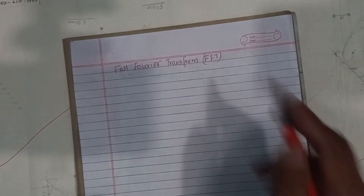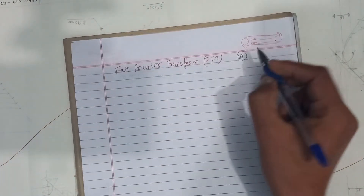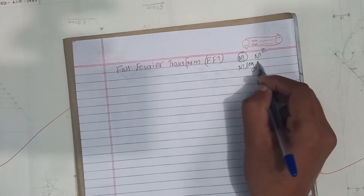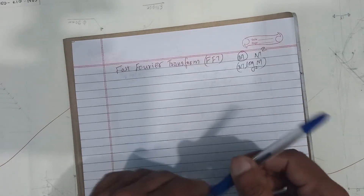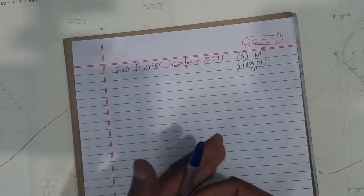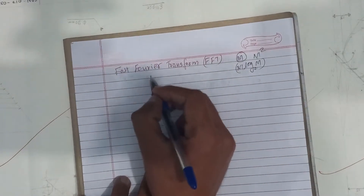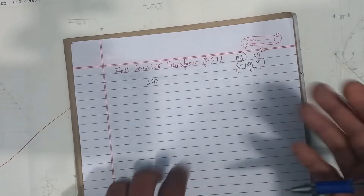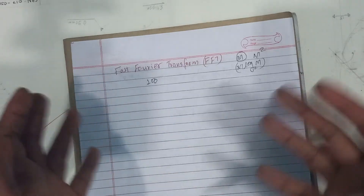For example, we can do the DFT. When we do N points, the complexity is N squared. For example, if we do the DFT with 10 to the power of 6 operations, the Fast Fourier Transform requires around 10 to the power of 4 operations. The DFT requires 100 times the computational power — that's how the Fast Fourier Transform offers massive improvement.